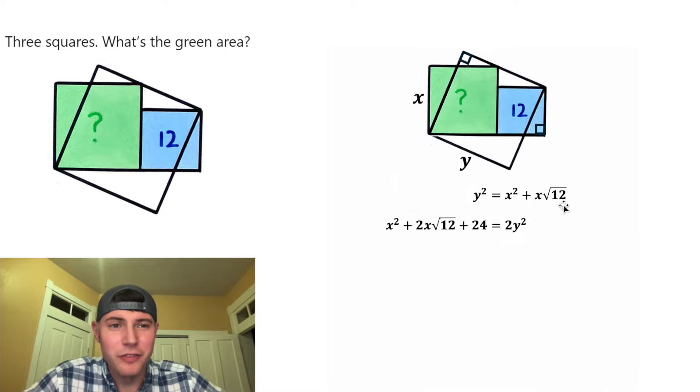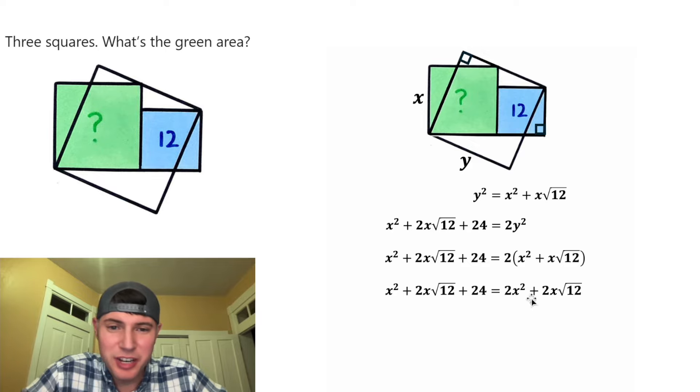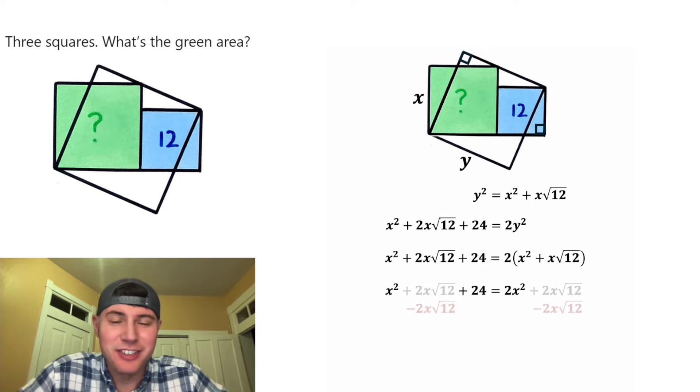So we know that Y squared is equal to all of this stuff, and we have a Y squared right here. So let's copy this down, and in the place of this Y squared, I'm going to plug in all that stuff. And next, let's distribute the two to both of those terms. Two times X squared is two X squared, and two times this is equal to two times this. Next, I'm noticing both sides of the equation have two X root 12, so let's subtract two X root 12 from both sides.